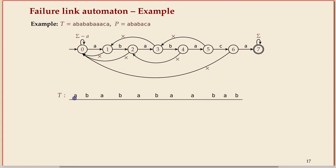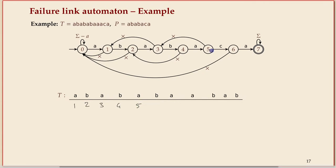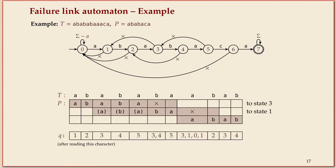From state five, there's no way to read B. So we go back to three via the failure link. From three we can read B, bringing us to state four. It can happen that in a certain state you have to follow failure links a few times before you can eventually read that character. That's just how these automata work.